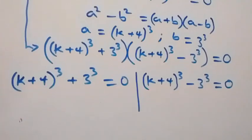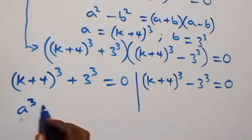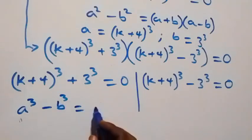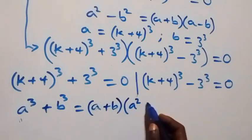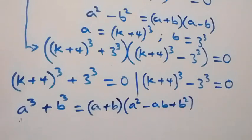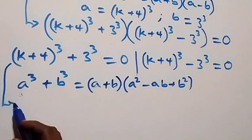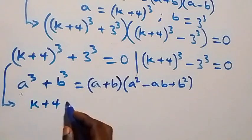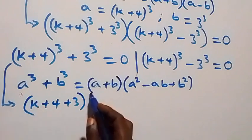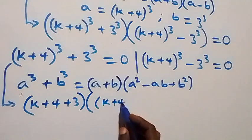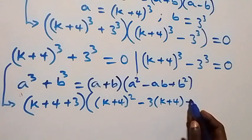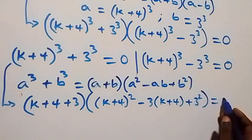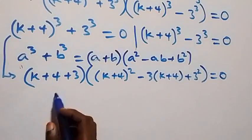When we solve the first case, this follows from the sum of cubes identity a cubed plus b cubed equals a plus b times a squared minus ab plus b squared. So the equation becomes: k plus 4 plus 3, into brackets, k plus 4 squared minus 3 times k plus 4, then plus 3 squared, close brackets, equals to zero.